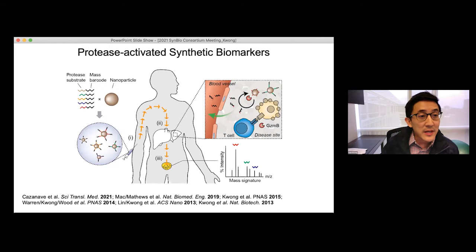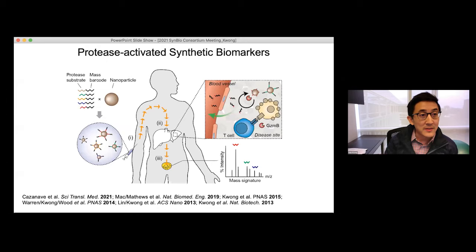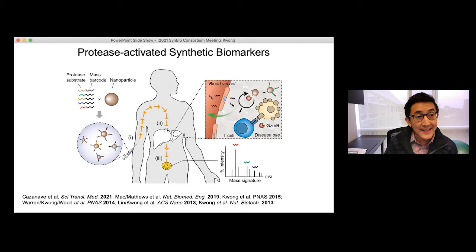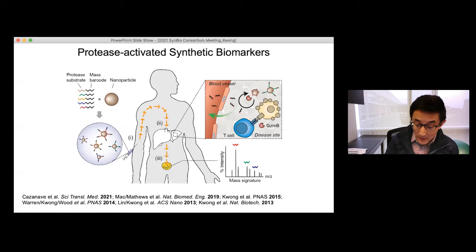Basically everywhere we've looked we've been able to identify proteases differentially expressed within tumors. With protease-activated synthetic biomarkers, we're designing different types of substrates, and the beauty of peptide-based approaches is that there are well-established methods — like barcoding using heavy amino acids — that proteomics pioneers have developed that we can leverage to design synthetic systems driving both sensitivity and specificity through multiplex probes in vivo. We've learned that you can actually engineer diagnostic sensitivity and specificity, and that tumor localization matters — an early detection signal that cannot predict which organ to do follow-on studies is largely not useful.